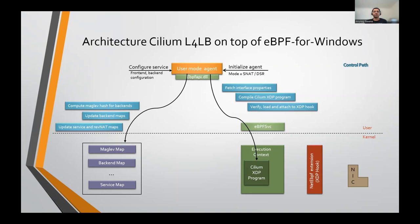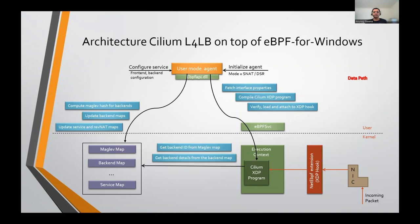Now the control path is set up for the load balancing to work for the configured service. Moving to the data path: when an incoming packet arrives on the NIC, the XDP extension invokes the Cilium XDP program. The XDP program inspects the incoming packet, consults the various maps programmed by the user mode agent to choose a back-end node, and then depending on whether SNAT or DSR is configured, either source NATs the packet or does IP-in-IP encapsulation. The packet is then returned to the extension with XDP-TX action, meaning the packet is hairpinned on the arriving NIC.